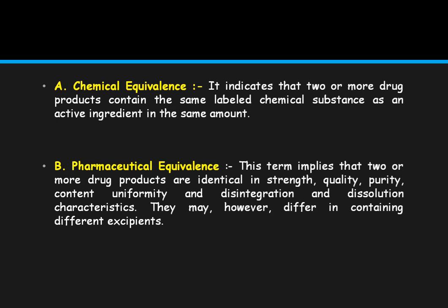Pharmaceutical equivalence implies that two or more drug products are identical in strength, quality, purity, and content uniformity. They may, however, differ in the excipients they contain. If different excipients are present in two different dosage forms but all other parameters are the same, we can say they are pharmaceutically equivalent.